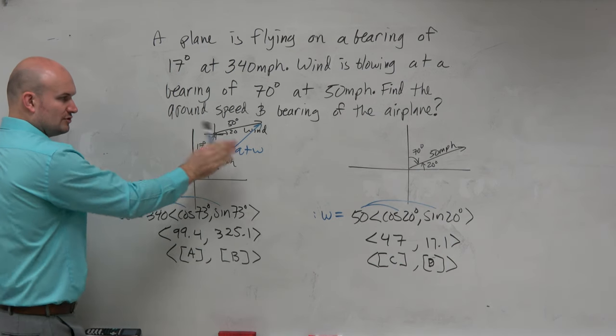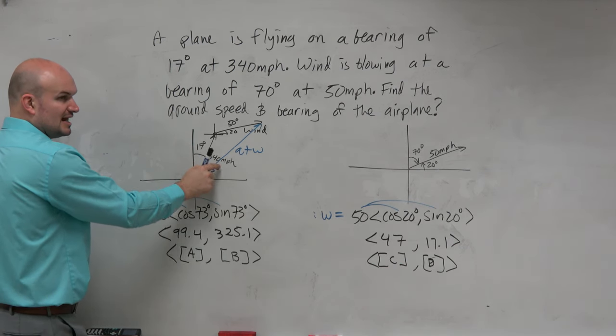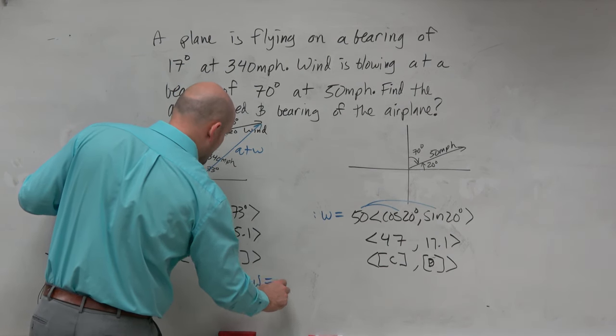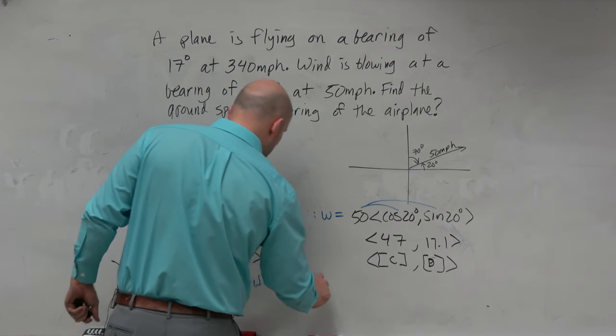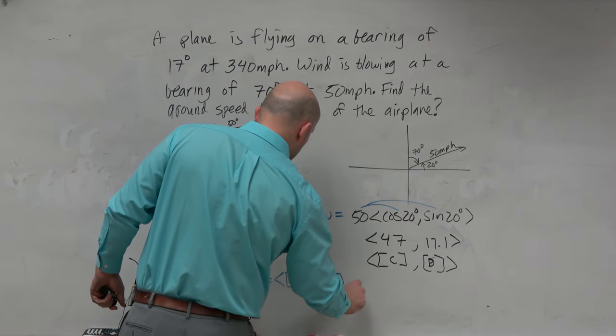This angle got pushed over to the right more, so it's not going to be 17 degrees anymore — it's going to have a different bearing. Let's figure out what A plus W is. All I'm going to do is take my stored answers. You just add the components — that's what we practiced last class. When adding vectors, you add the first components and the second components. So alpha A plus alpha C gives 146.4 — I'll store that as alpha E.